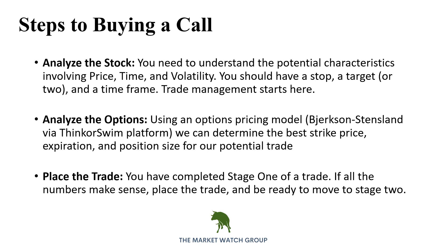Now we can go use an options model. The Bjerksund-Stensland model via the Thinkorswim platform. The original model is Black-Scholes — that won a Nobel Prize, but nobody uses it anymore because it's outdated. It became the binomial, and then the Bjerksund-Stensland. That's going to help us determine the strike price, the expiration date, and the size. You have a stop, a target, possibly a secondary target, the strike price chosen, the expiration date chosen, and the number of contracts — chosen to control risk based on where you'll stop out. Now you place the trade. That's it.